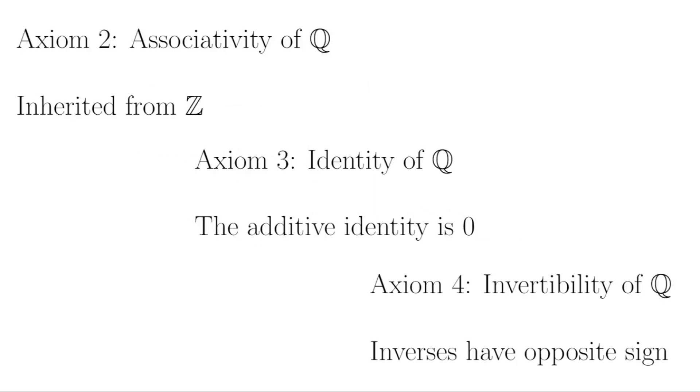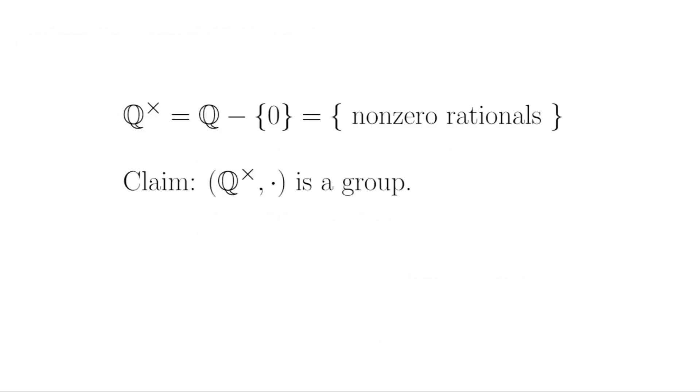That was actually the hard part. The rest of the axioms follow easily. Q inherits associativity from the integers. It has an additive identity, namely 0. And lastly, any positive rational number has an additive inverse, namely its negative, and vice versa.